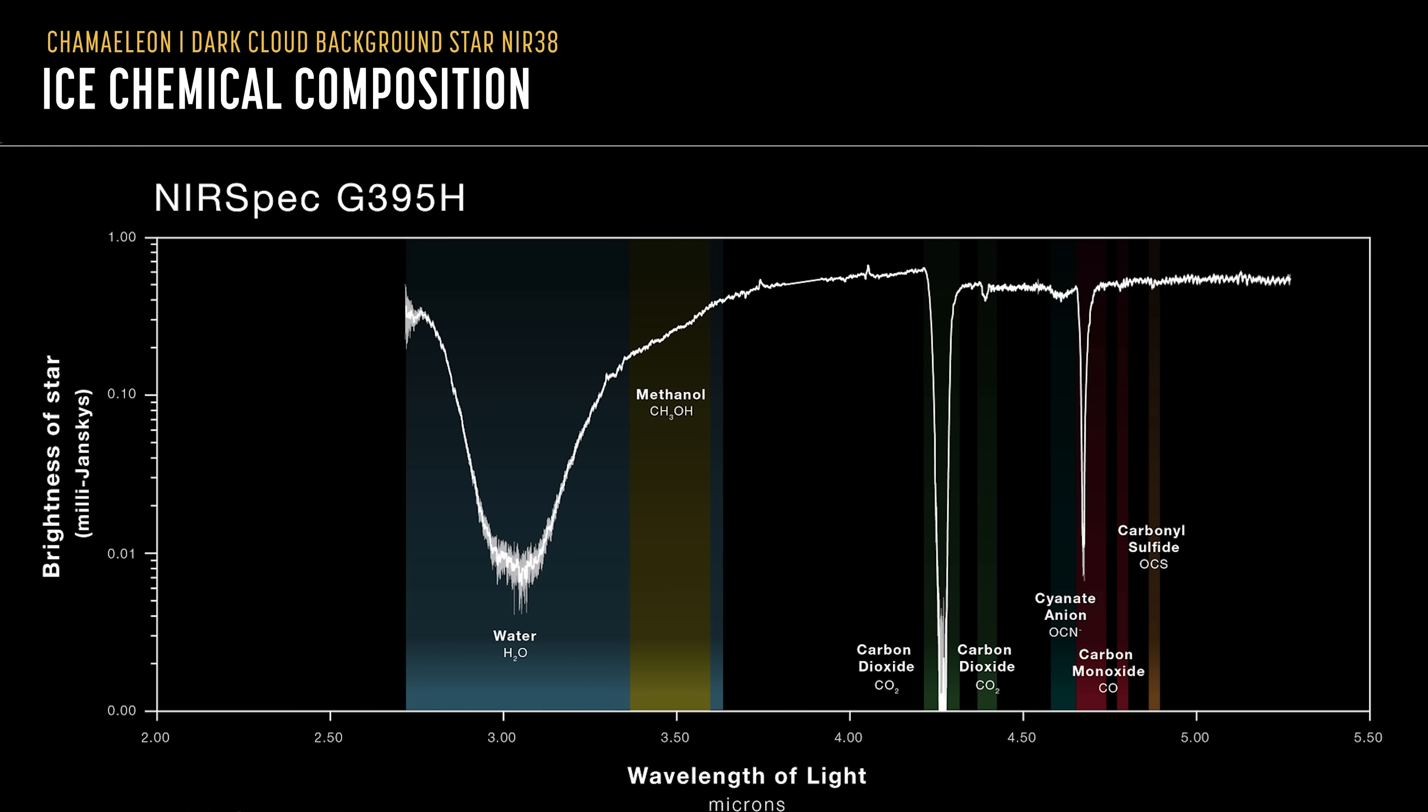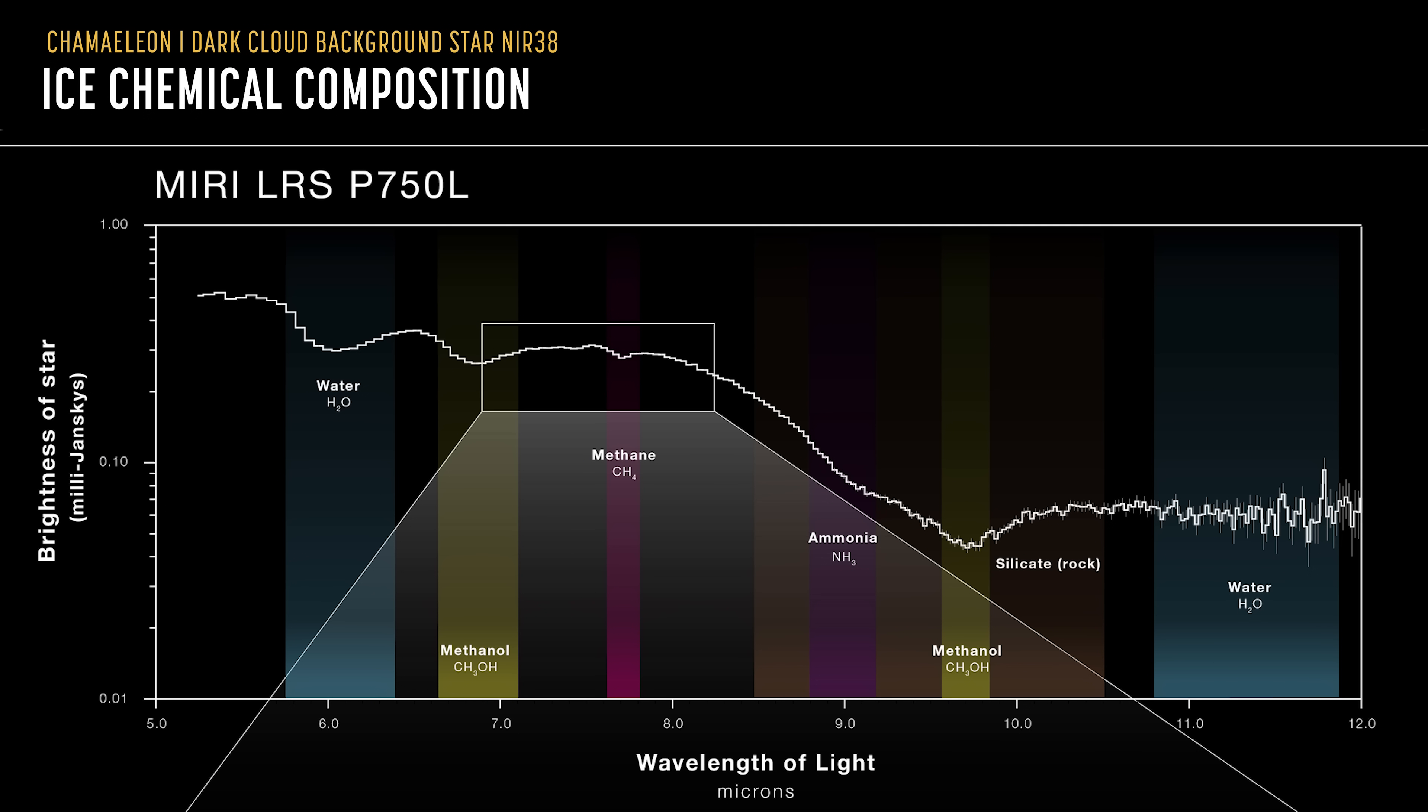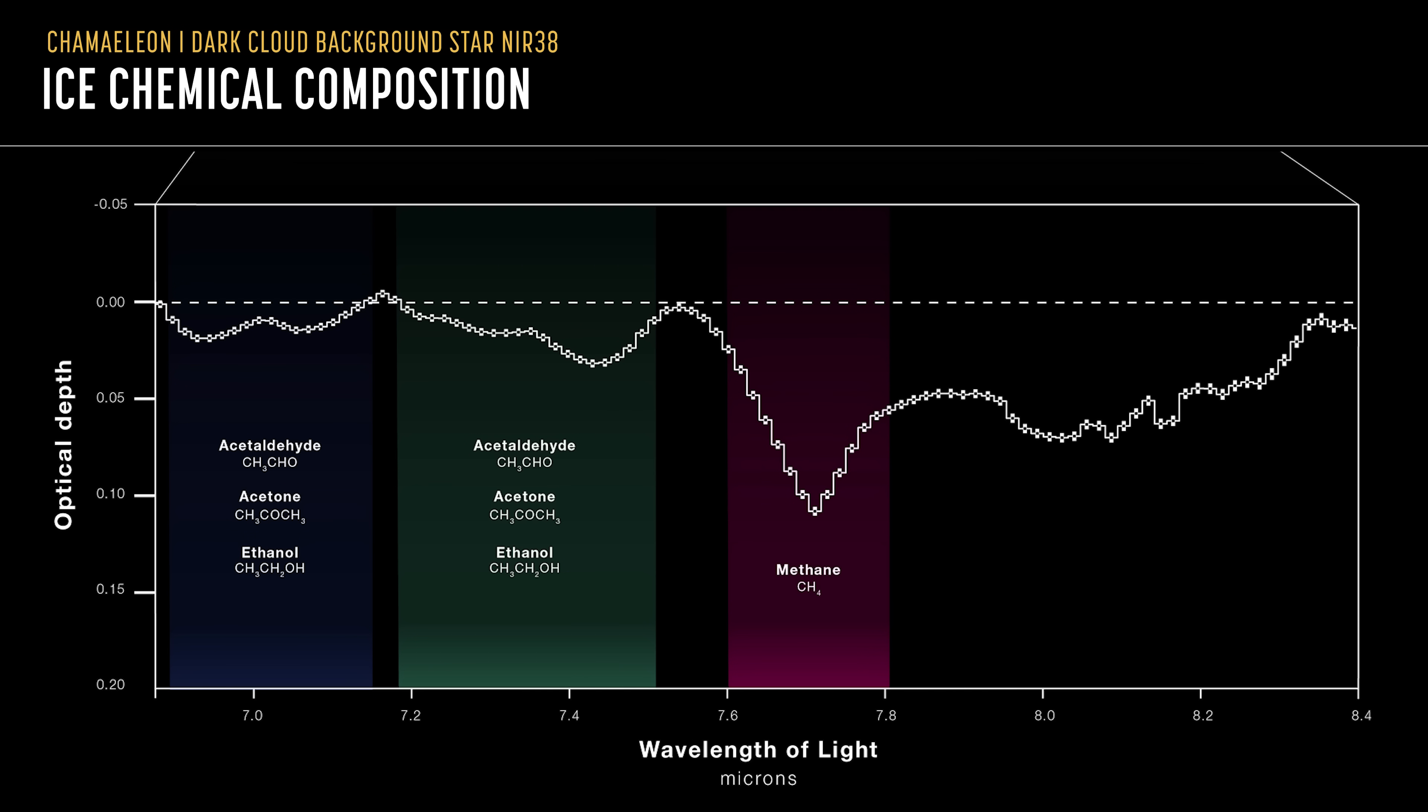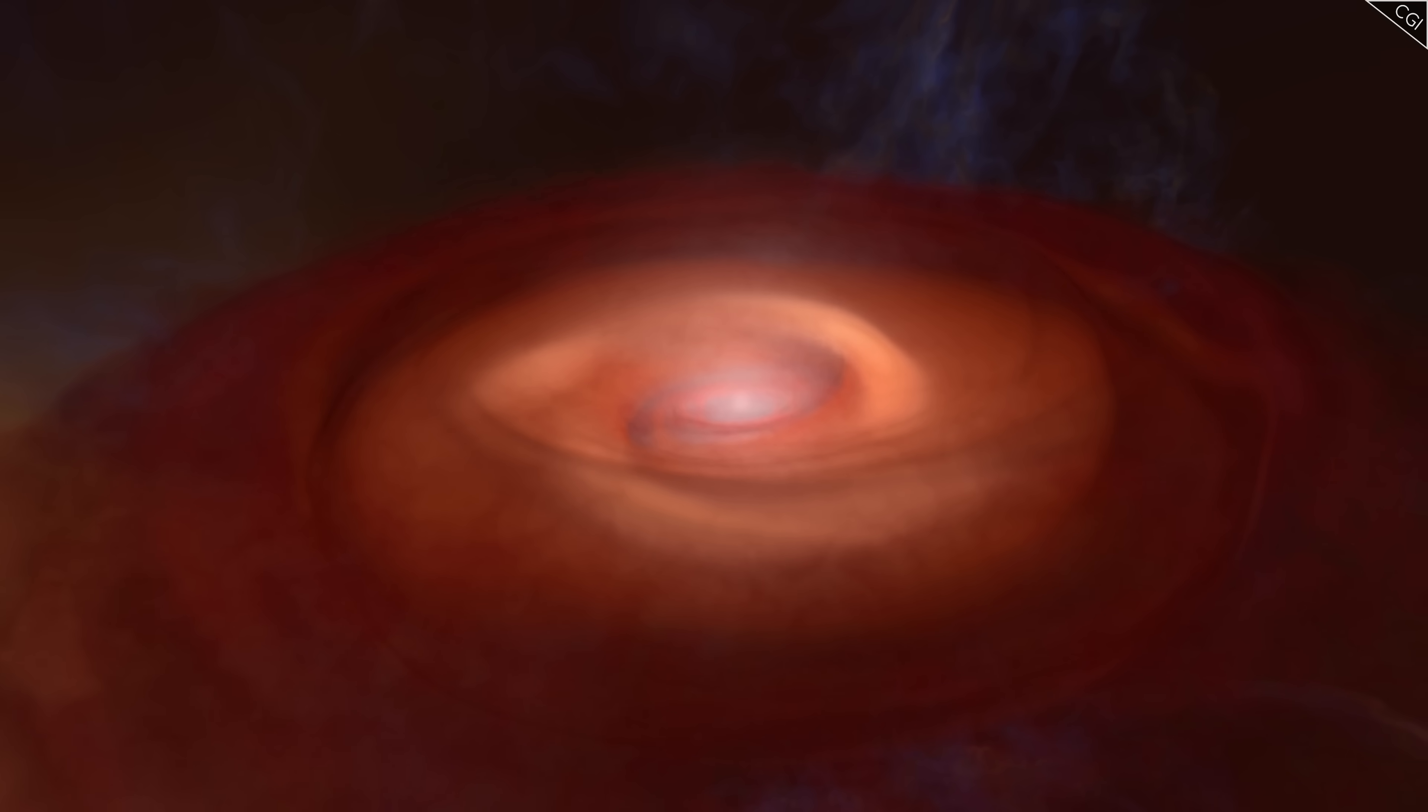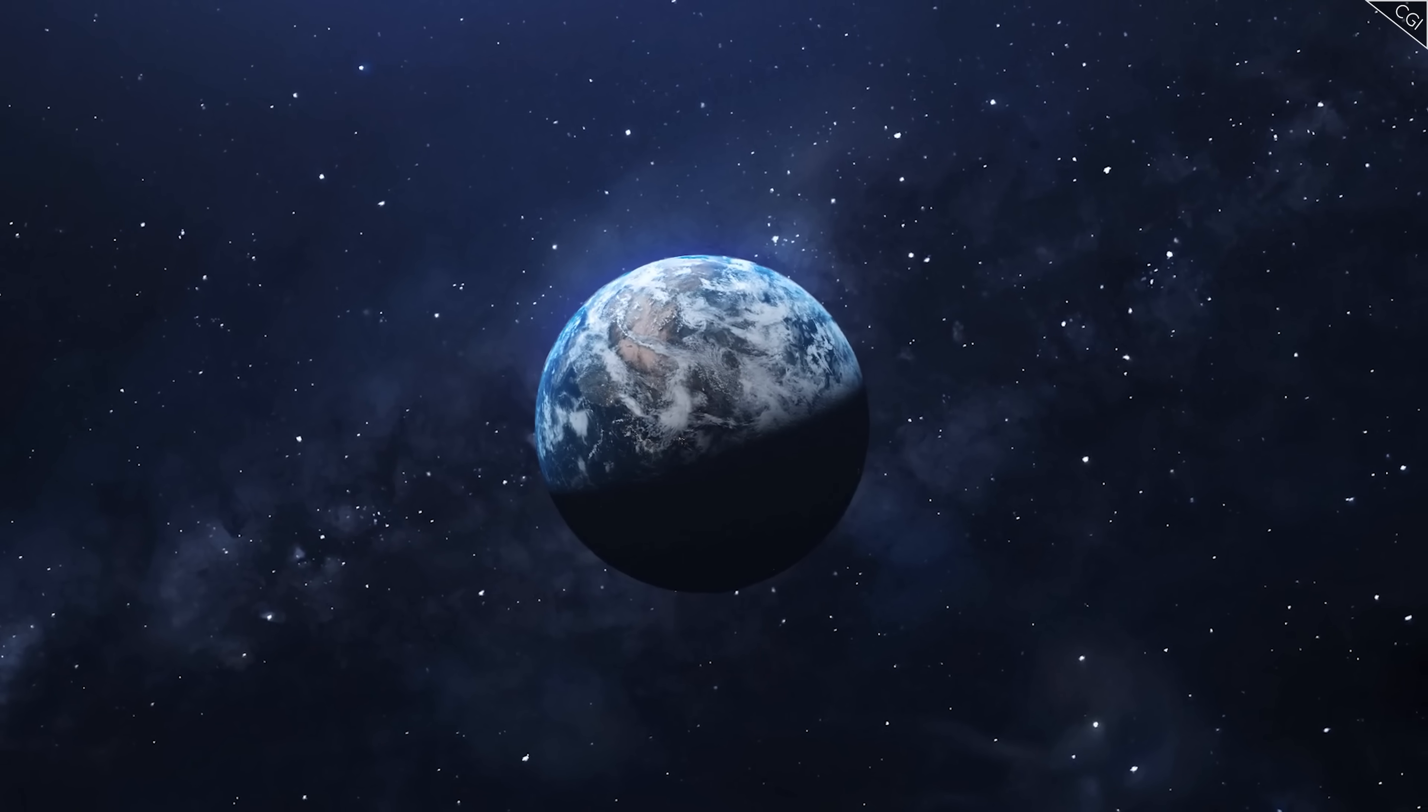What they found was a surprise. Not only does the Chameleon 1 Dark Cloud contain water ice, but also some of the fundamental building blocks of life – ammonia, methane and methanol. This means that stars and planets that one day form in this icy cloud will start off with some quite complex chemicals to get the ball rolling. And if this turns out to be common, it makes it much more likely that worlds capable of bearing life are actually widespread throughout the universe, decreasing the likelihood that we are alone in it.